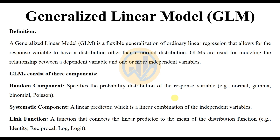First, the explanation of the generalized linear model. The definition of the GLM: a generalized linear model (GLM) is a flexible generalization of ordinary linear regression that allows for the response variable to have distributions other than a normal distribution. GLMs are used for modeling the relationship between a dependent variable and one or more independent variables. PAST statistical software supports one or two independent variables only. GLMs consist of three components: the random component, the systematic component, and the link functions.